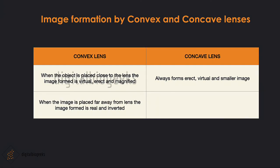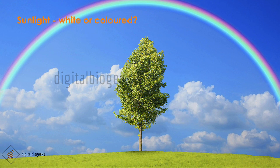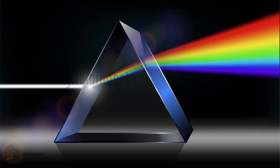All of us enjoy a rainbow in the sky, and we know there are seven colors in the rainbow: red, orange, yellow, green, blue, indigo, and violet. We call sunlight white light. To see if white light contains other colors, take a glass prism and allow a narrow beam of sunlight through a small hole in a dark room to fall on one face of the prism. Let the light coming out on the other side fall on a white sheet — we can see colors similar to the rainbow. This shows that sunlight contains seven colors, and together they appear as white.